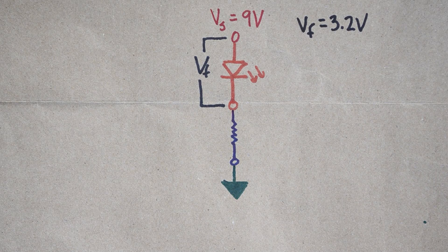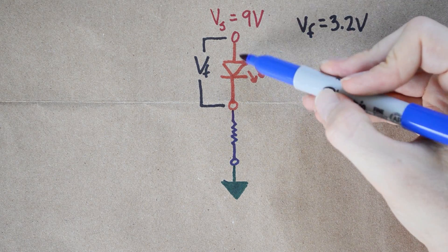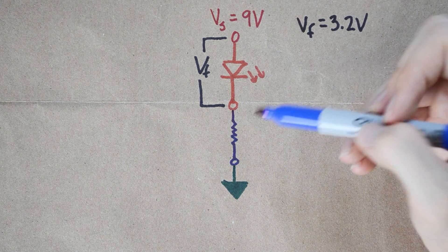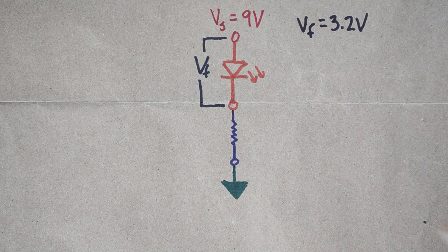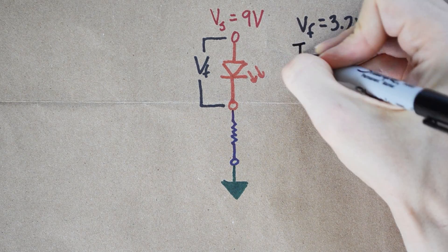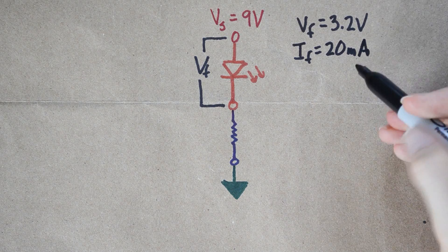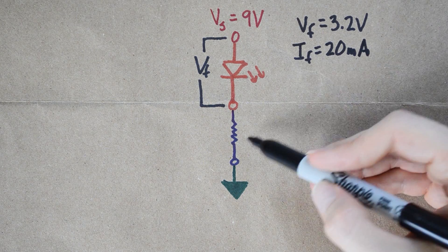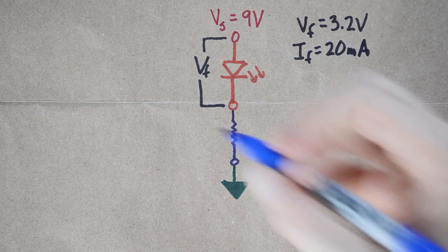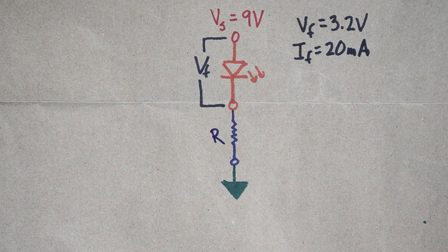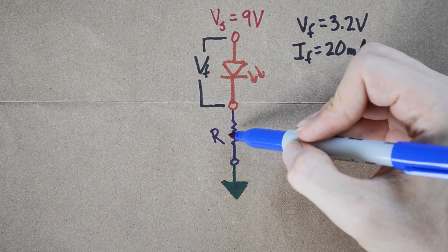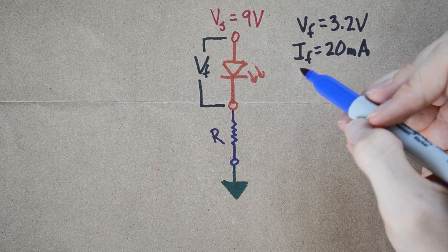The next thing we want to know is where does forward current come in — what is that all about? Forward current is how much current can be pulled through this LED in order for it to operate at peak performance. What they're saying is the forward current for this LED should be somewhere around 20 milliamps, and the way you set that forward current is by manipulating this resistor. As you adjust this resistor, the current through the LED changes.